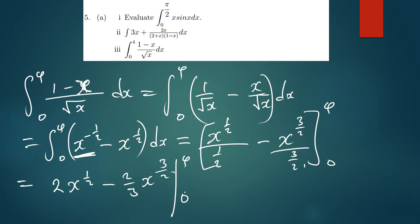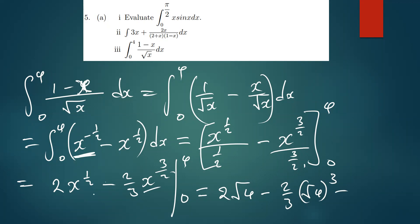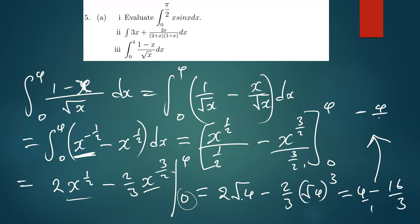Substituting x equals 4: we get 2√4 minus (2/3)·(√4)³, which is 2(2) minus (2/3)(8), giving 4 minus 16/3. Substituting x equals 0 gives zero. Simplifying 4 minus 16/3 gives 12/3 minus 16/3 equals −4/3. So the final answer for this integral is −4/3.